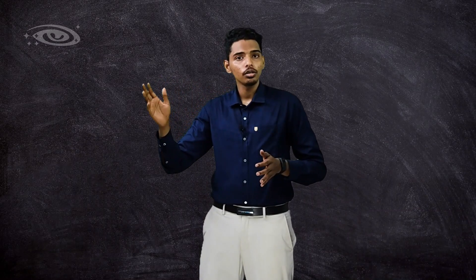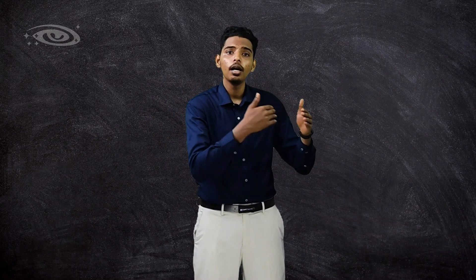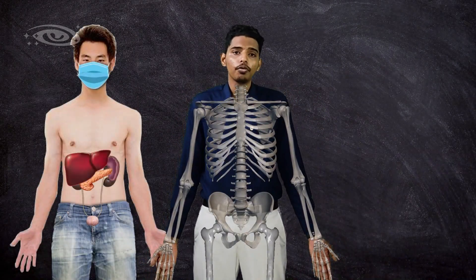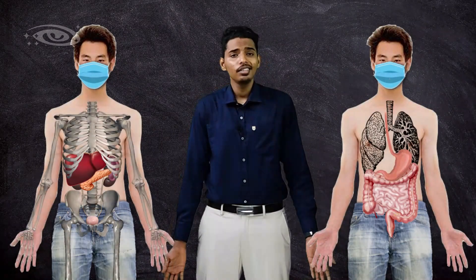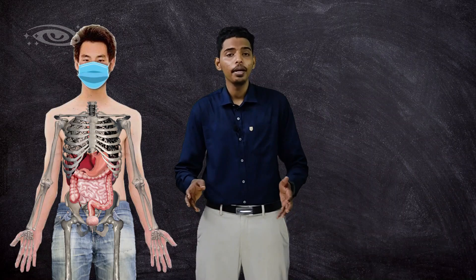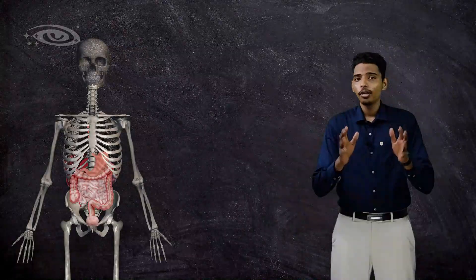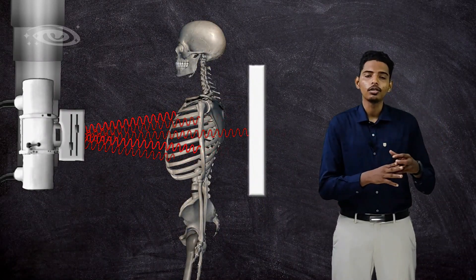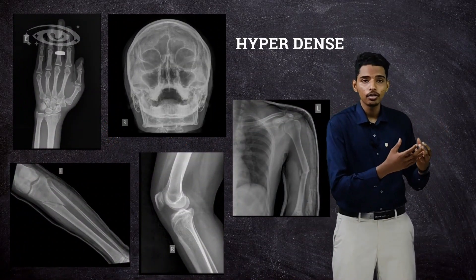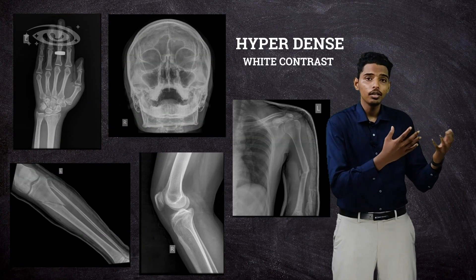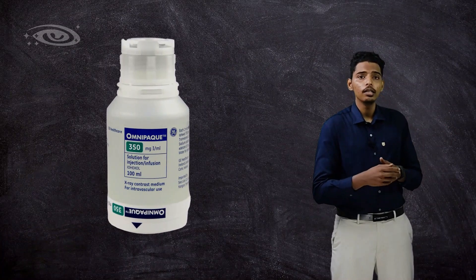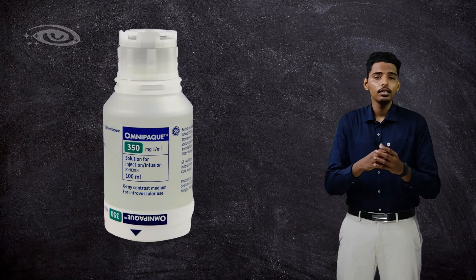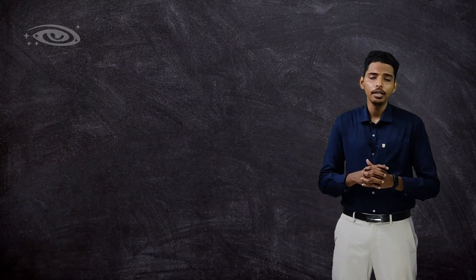Photoelectric absorption is not constant — each substance has a different absorption rate based on its atomic number. In our body, bones have a high atomic number compared to soft tissues, so bones absorb more X-ray photons and appear hyperdense, or white, in the radiographic image. Contrast agents used in studies like dyes also have a higher atomic number, so they also appear hyperdense or white. Soft tissues absorb X-rays at a moderate rate and appear isodense, or gray, in the image.